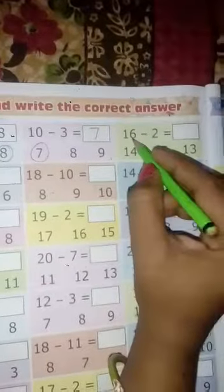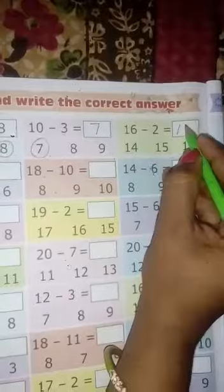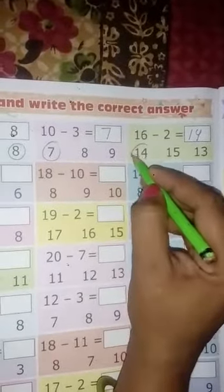Next, 16 minus 2 equal to 14. Who is the right answer? 14, 15 and 13. 14 is the right answer, so circle the 14.